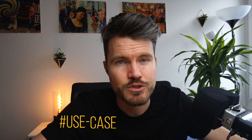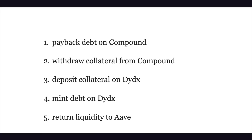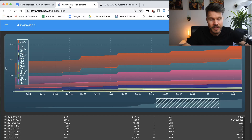You've also got debt refinancing and interest rate swapping, which is incredibly useful for larger amounts of funds given the gas fees. Flash loans can move your collateral from one liquidity provider to another — for example from Aave to Compound if Compound has higher interest rates for a certain token. You can borrow an asset with a flash loan from Aave, pay back debt on Compound, withdraw collateral from Compound, deposit it on dYdX, mint debt on dYdX, and return the liquidity to Aave. In simple words, you're moving your debt from one platform to another.